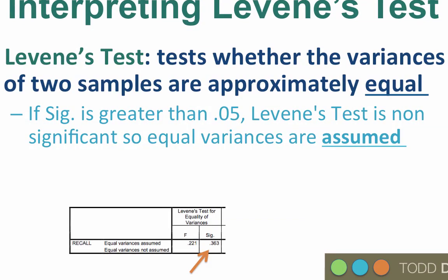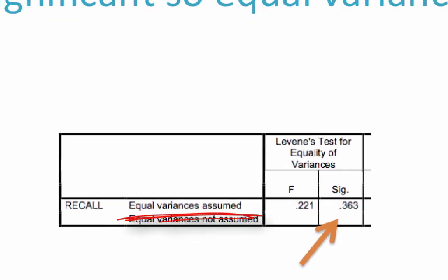Levine's test is an F-test, the same kind of test as an ANOVA, so we interpret the significance value exactly the same as for any hypothesis test. Check the box labeled SIG. If the significance is greater than 0.05 — i.e., non-significant — the variances are not significantly different, so equal variances are assumed. For example, if the probability is 0.363, the assumption of homogeneity of variance has been met, and we interpret the t-test using the top line: equal variances assumed.